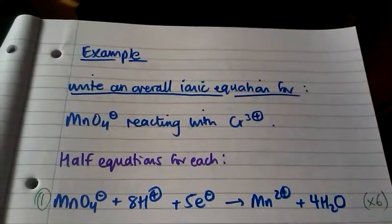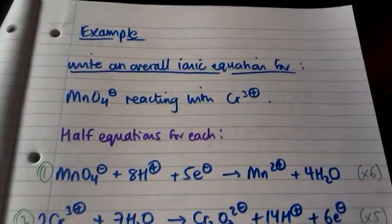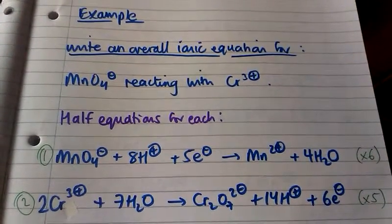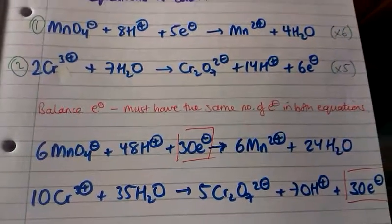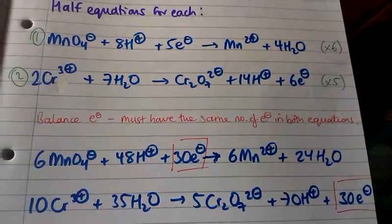So the first equation, if we multiply that by 6 and the second equation if we multiply that by 5, that gives us 30 electrons in both equations.